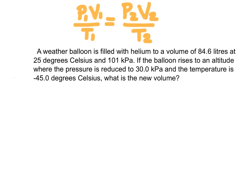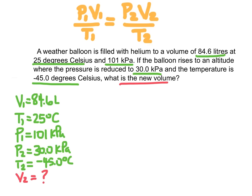The problem states: a weather balloon is filled with helium to a volume of 84.6 liters at 25 degrees Celsius and 101 kilopascals. If the balloon rises to an altitude where the pressure is reduced to 30 kilopascals and the temperature is negative 45 degrees Celsius, what is the new volume? We must check SI units — temperatures are given in Celsius and must be converted to Kelvin by adding 273. This gives an initial temperature of 298 Kelvin and a changed temperature of 228 Kelvin.